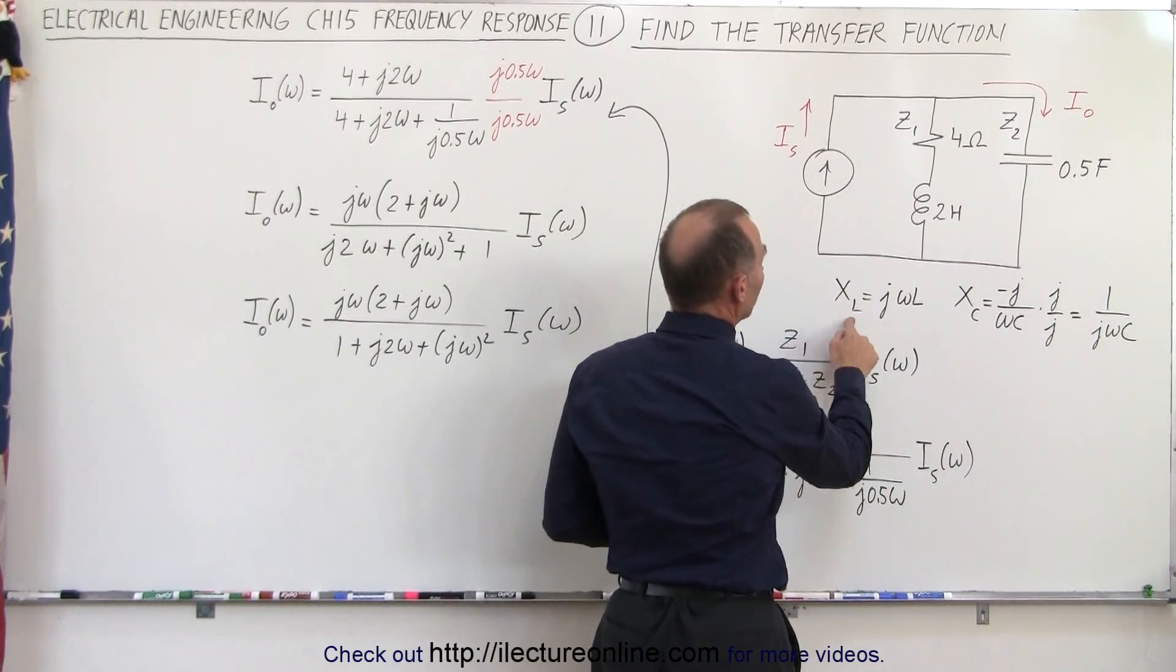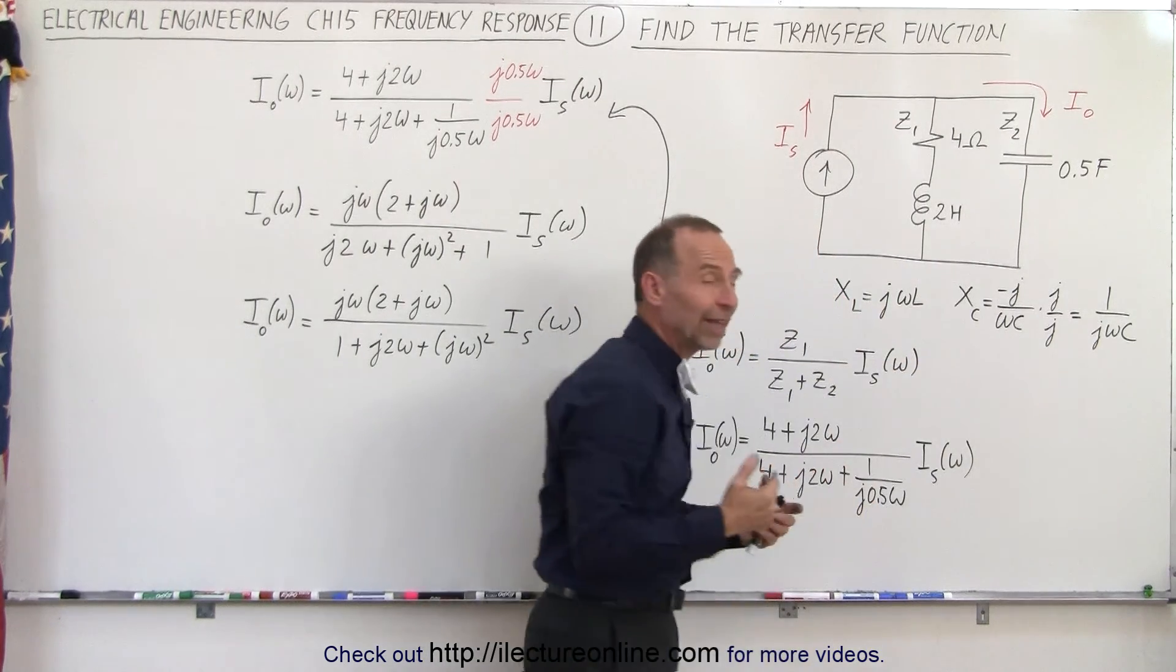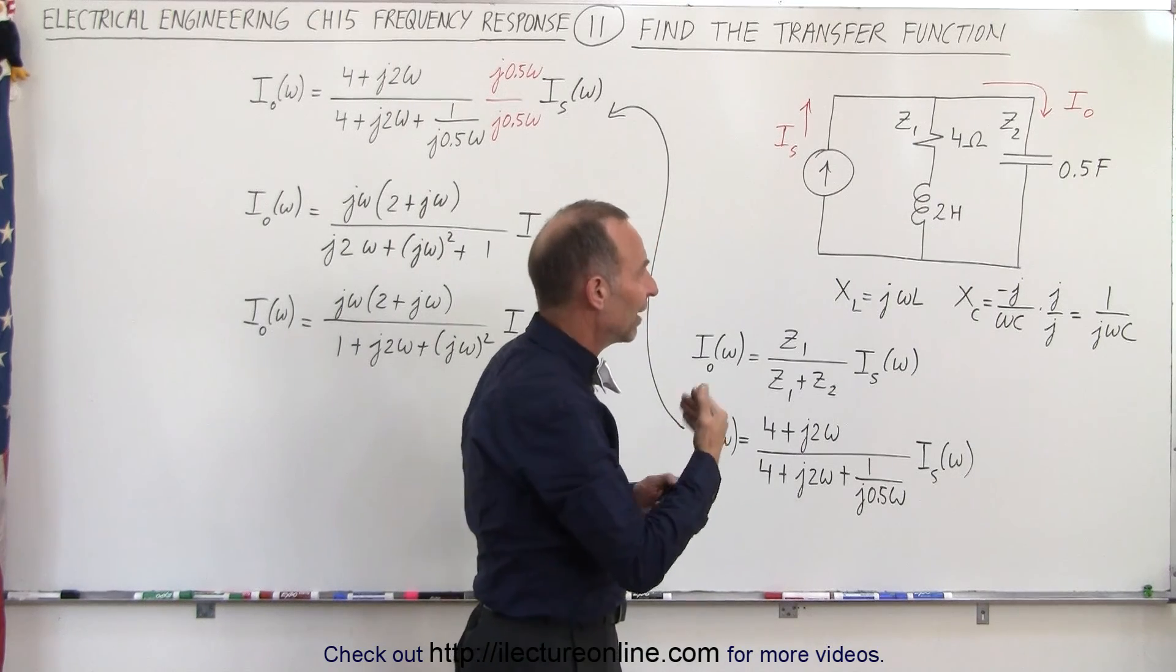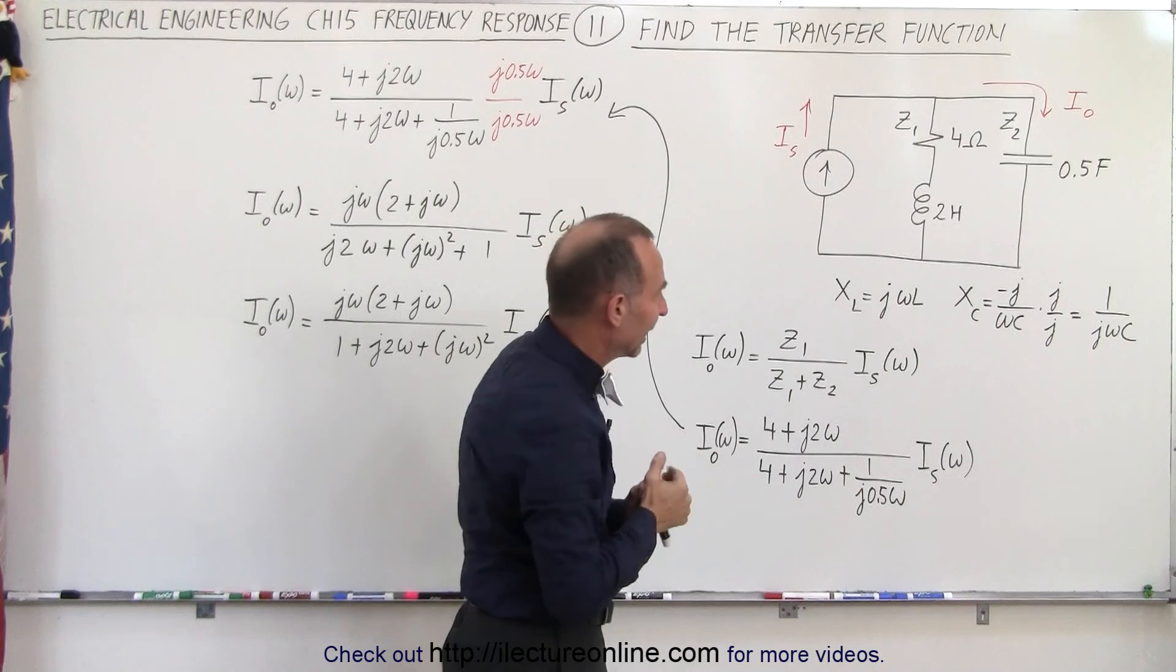We need to remember that the reactance across the inductor is equal to J omega L. The magnitude is omega L and J of course indicates that there's a 90 degree phase difference between the voltage across the inductor and the current in the circuit.